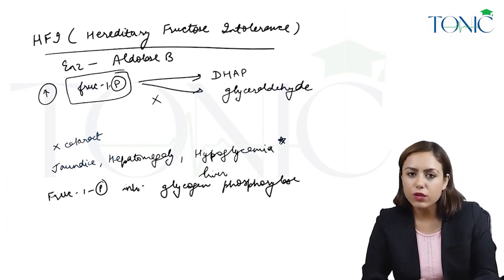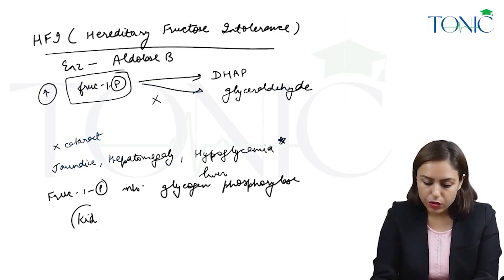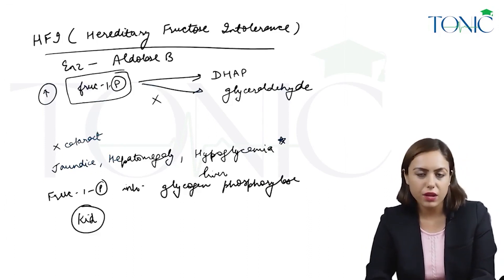The glycogen of the liver will not be broken down, so glucose will not be released into the blood, causing hypoglycemia. The kidneys are also affected, so if not treated, kidney failure can occur.